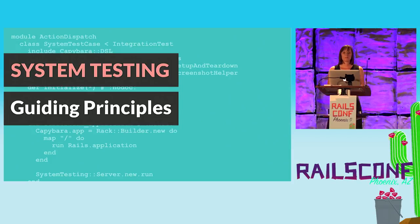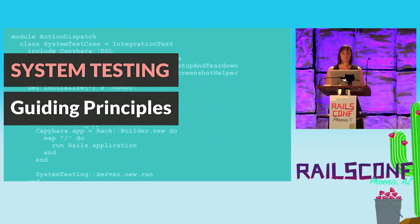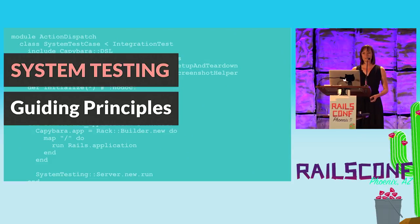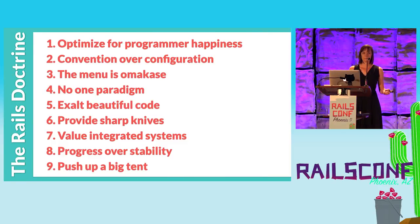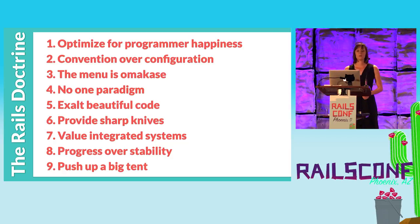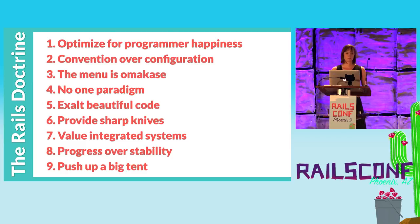When you're implementing something you're unfamiliar with, it's best to have a set of guiding principles in order to make decisions about design and implementation. Without these goals, it's easy to get sucked into scope creep or bike-shed arguments about the details. For guidance on building system tests, I used the Rails doctrine — a set of nine pillars that drive decision-making and code that goes into the Rails ecosystem. System tests meet all of these requirements in some way.